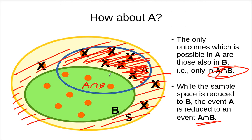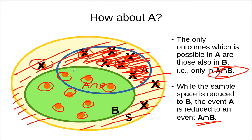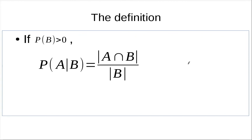What's the probability of A given B? Instead of counting points outside B — they're not important anymore — we only count points in set B. Those are the only possibilities, and among these, only the outcomes in A intersection B are what we want. So we count outcomes in A∩B over outcomes in B.